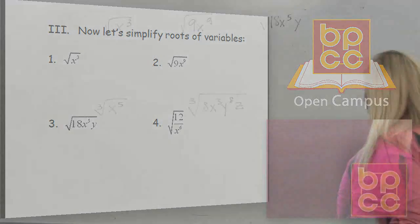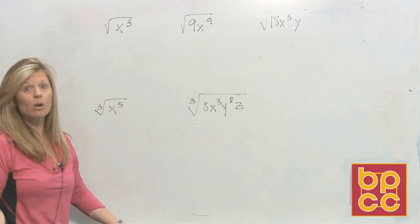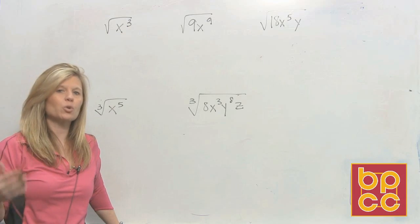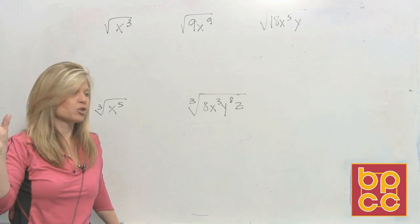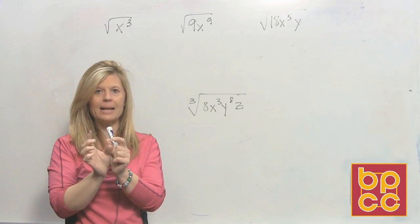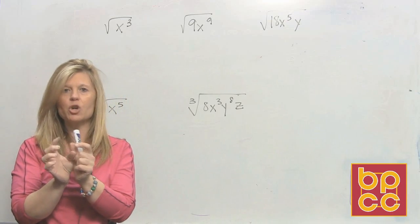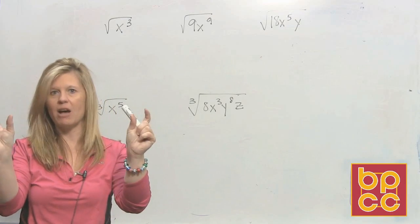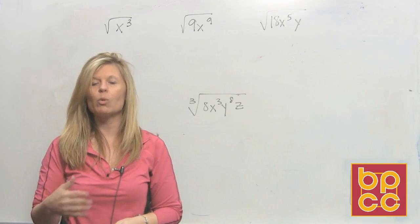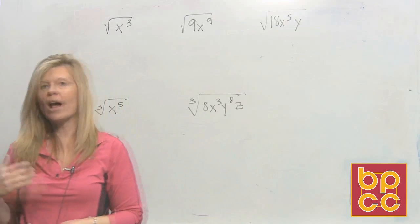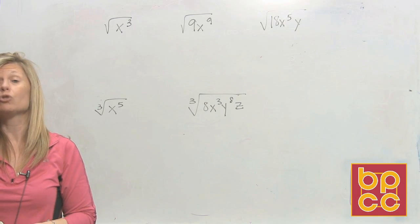Let's go to the board. I want to do the square root of x cubed. We've got to go back to our definition — what does square root mean? It means something times itself. Is there two of the same thing you could multiply to make x cubed? No, there's not. The only way to multiply to make x cubed is x squared times x, and they're not the same, so that wouldn't fit the definition. To square root a variable, what are you supposed to do with the exponent? You're supposed to divide it by 2.